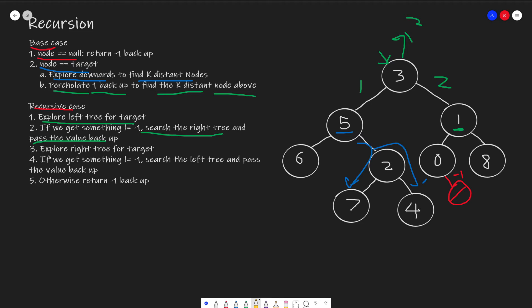After exploring the left tree, we can also explore the right tree the same way. The only difference is when we get a non-negative-1 value from the right, instead of searching the right tree we search the left tree. Then we pass the value back up to the parent. Otherwise, if neither left nor right found the target, we return negative 1 and continue searching.